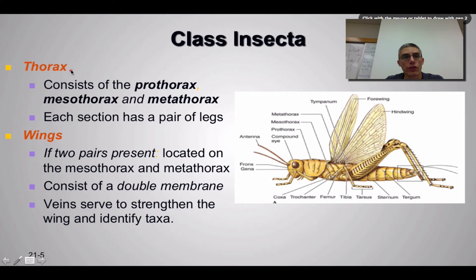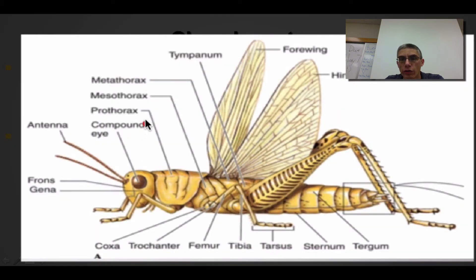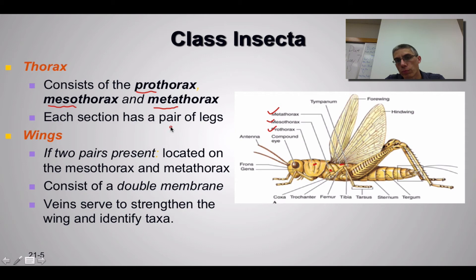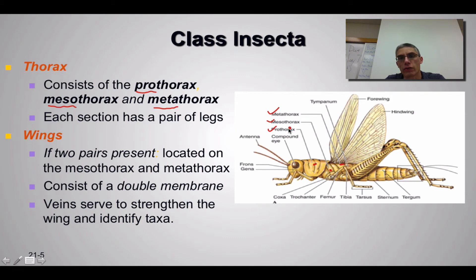Looking at how the animal is put together, the thorax region is broken down into three parts: the prothorax, the mesothorax, and the metathorax. On the right, you can see the metathorax, the mesothorax, and the prothorax labeled in this area of the animal. Each section has its own pair of legs, which is one way to identify where these sections fall. The metathorax has the sturdy hind legs, the mesothorax has the middle pair of legs, and the prothorax — being towards the anterior region — has the front pair of legs.